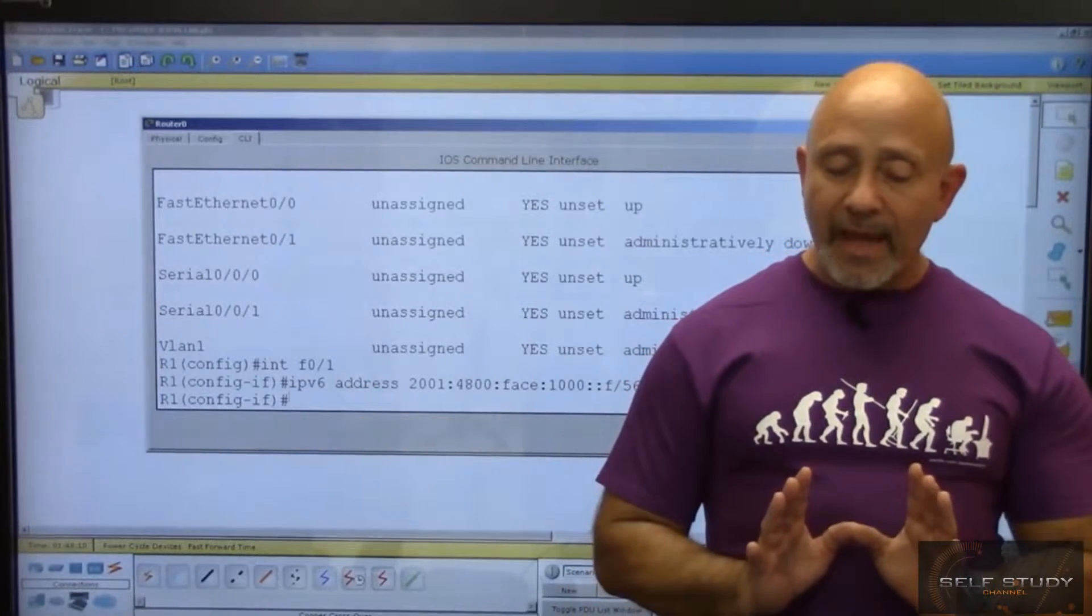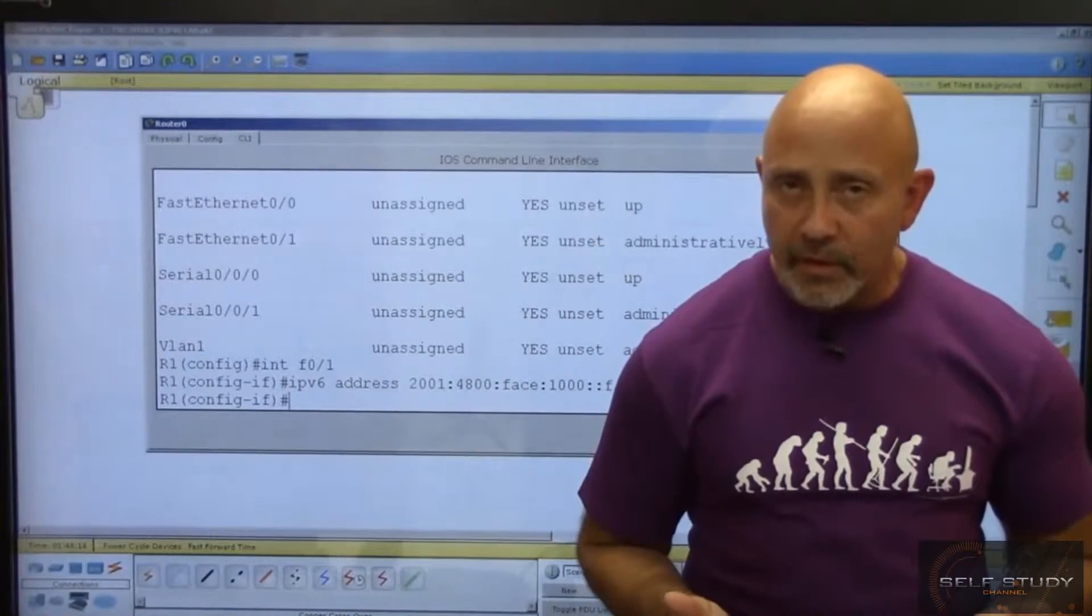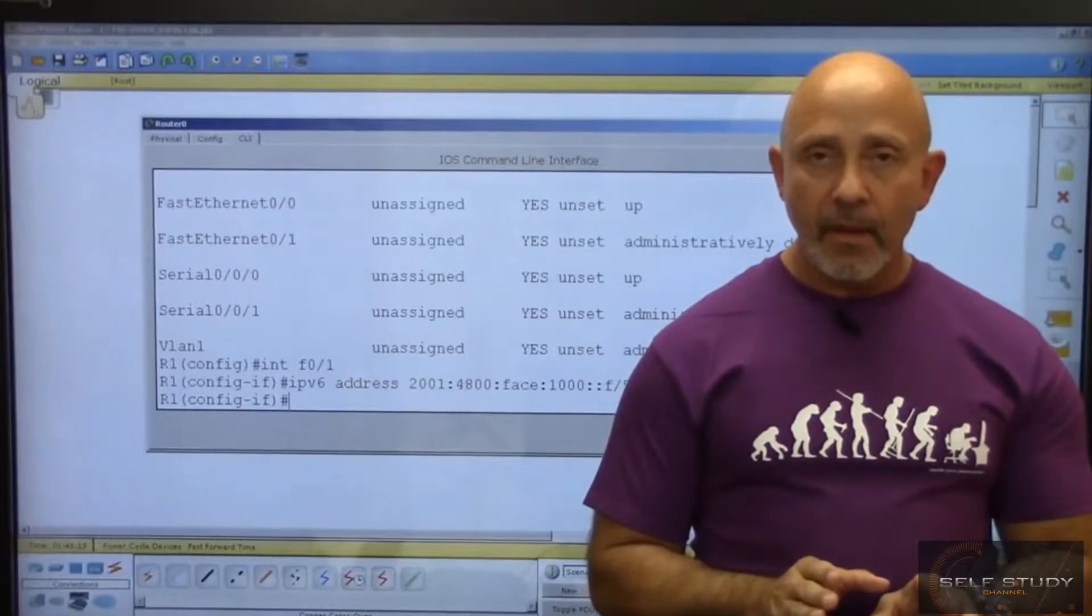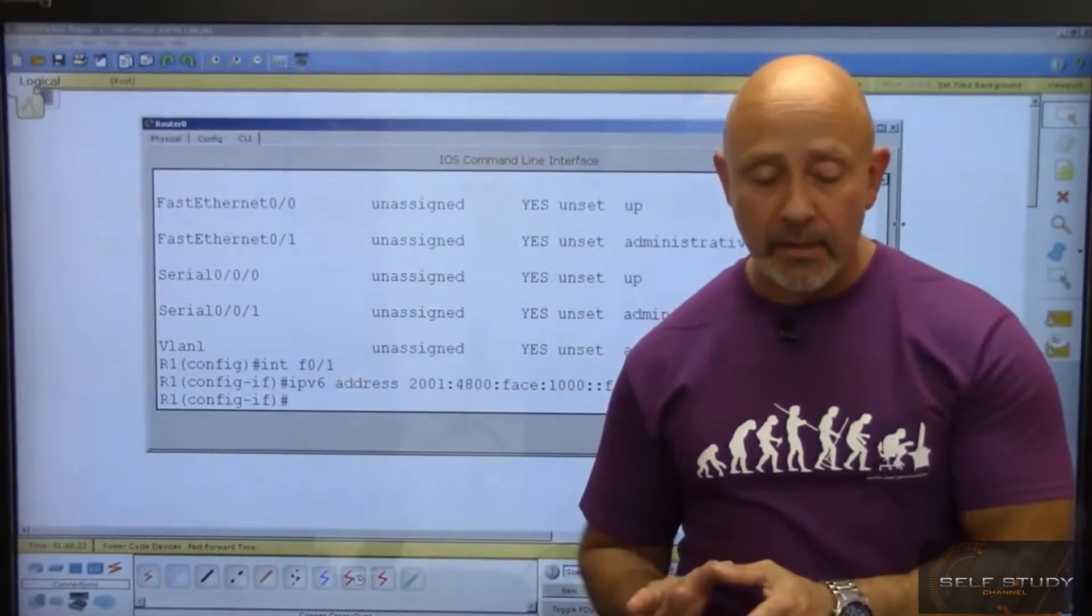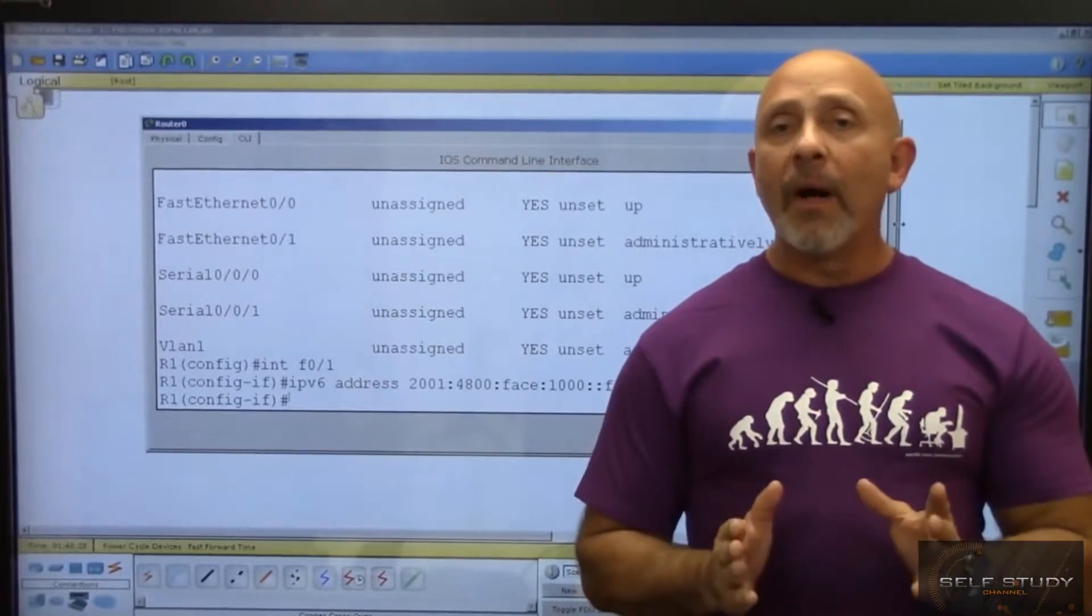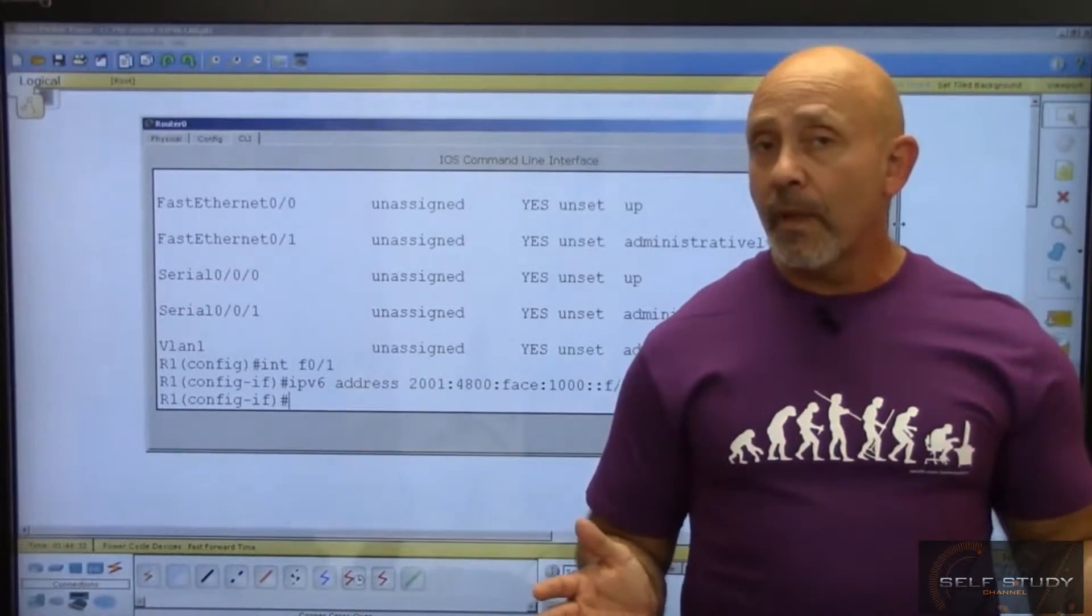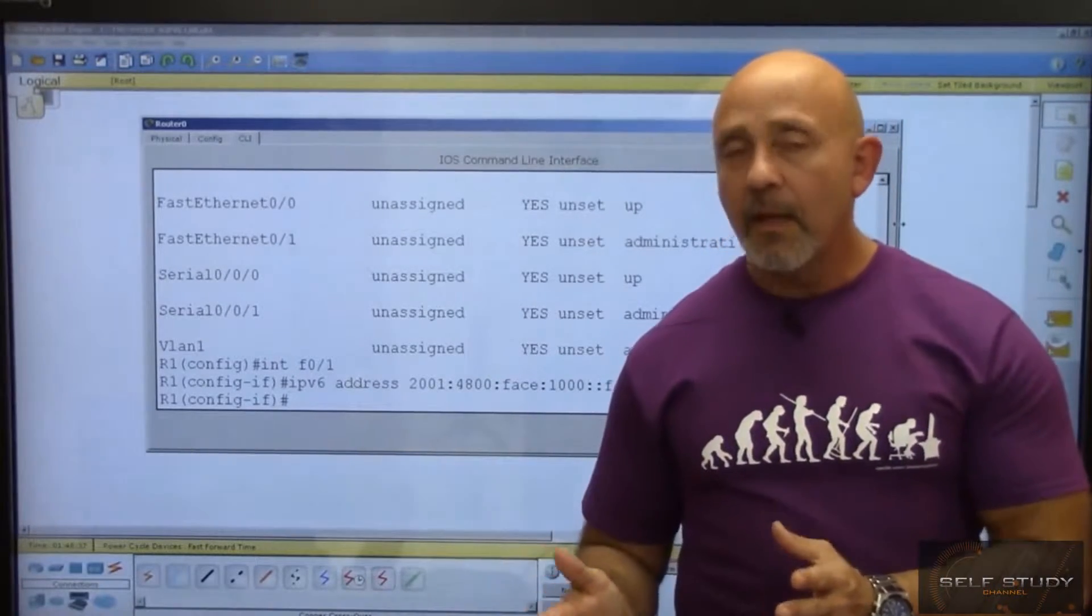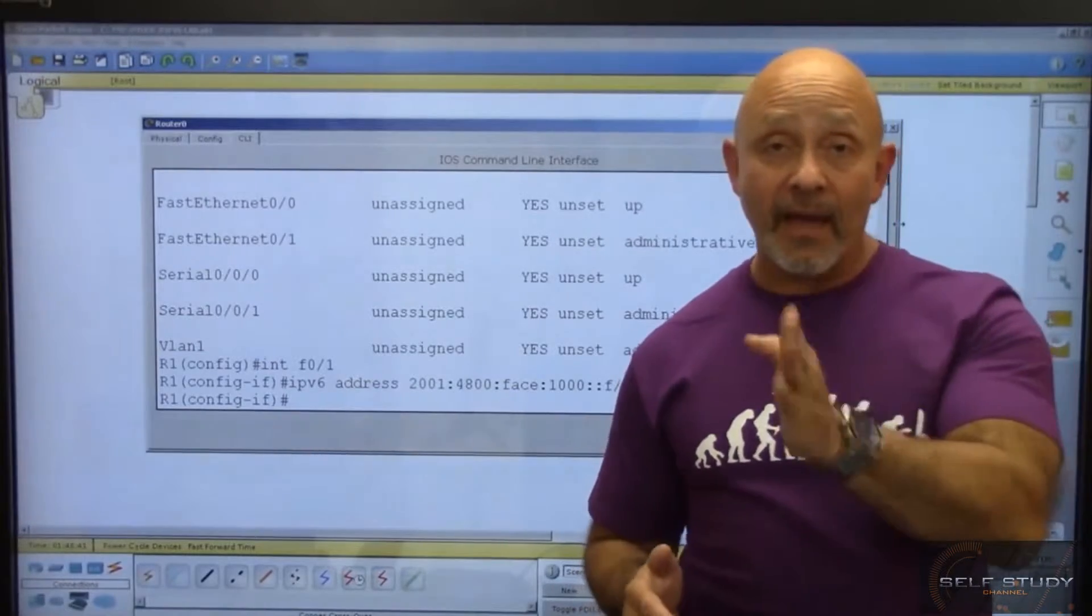Now we've done that. EUI-64 is what auto-configuration does. What it does is it's going to get the MAC address of this particular interface and put it as a portion of the IP address, the actual IPv6 address. But your MAC address is only 48 bits in length, you need a 64-bit address, the interface ID portion of it. So what does it do? It puts a FFFE, F-F-F-E, smack in the middle of that MAC address.